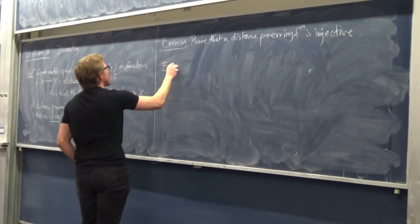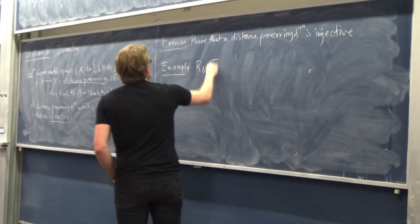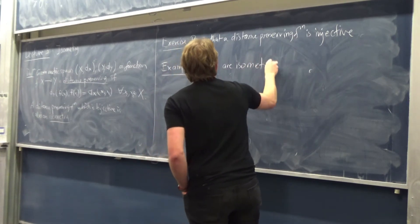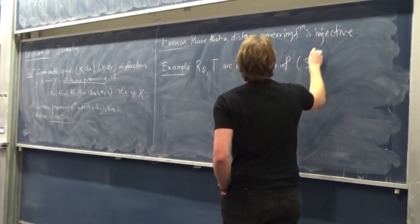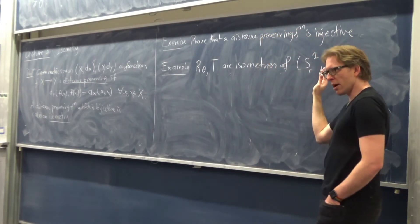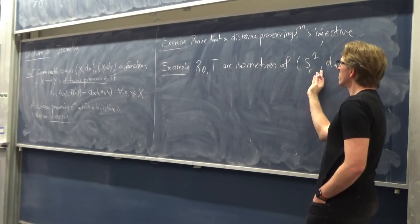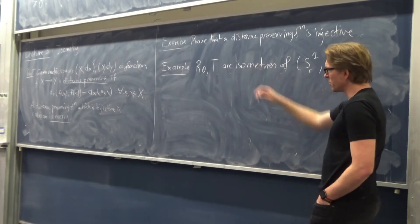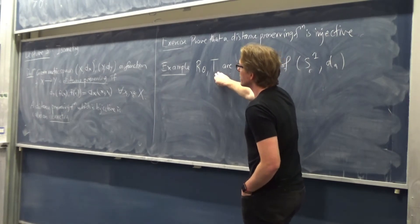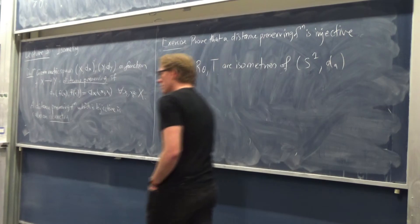So for example, when I say isometry of a metric space, I mean isometry from that metric space to itself. As we just discussed, all the rotations and T, which was reflection in the x-axis, those are both isometries of S1 with this metric we've just constructed.